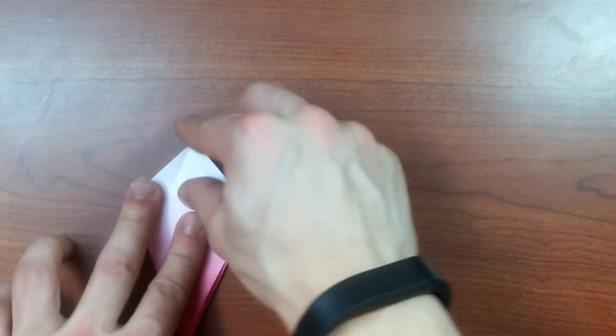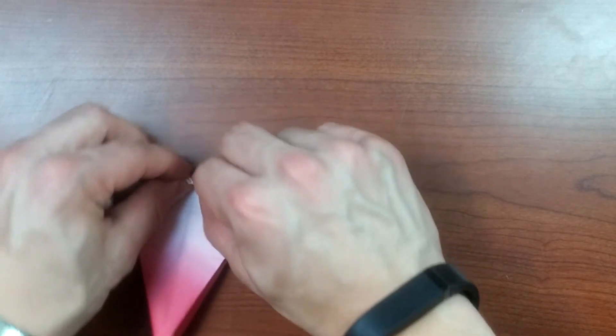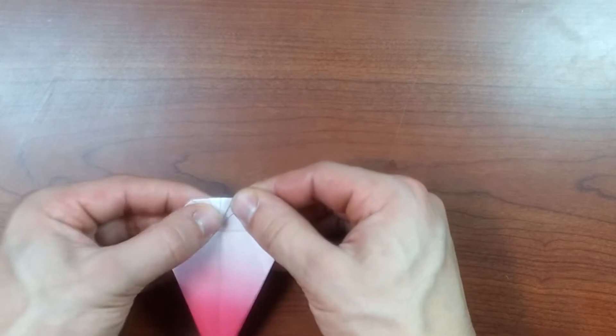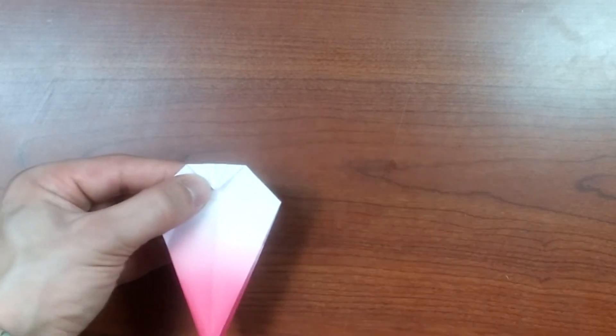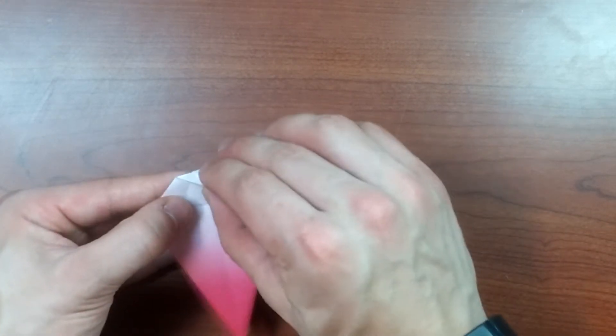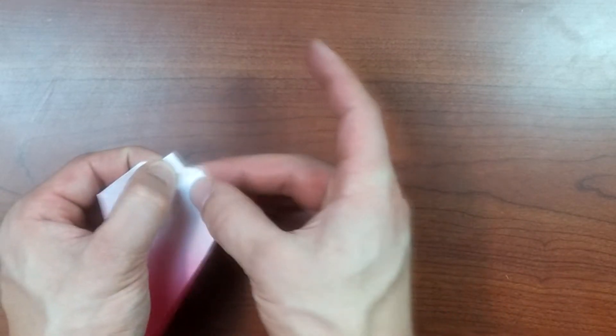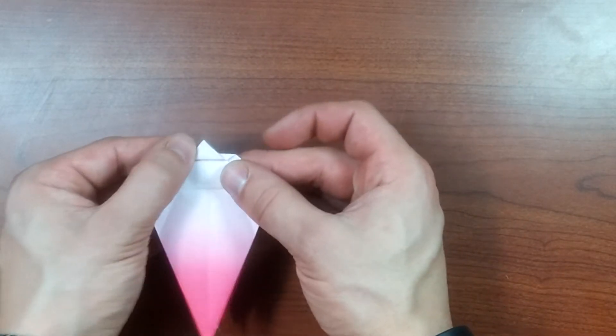And fold this point down to about here. There's no reference, so that's awesome. But this is the nose, so make it as big as you want. Now fold it back up. To again, no reference. To about here, so that it's overlapping quite a bit.